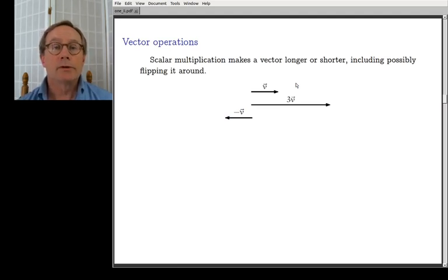The operations that we introduced for vectors last time were addition and multiplication. Multiplication is the easier of the two, so starting with multiplication. If you multiply a vector times three, you make it three times as long, pointing in the same direction, but three times as long. If you multiply a vector by minus one, you make it point in the other direction. If you multiply the vector by minus three, you'd make it point in the other direction and be three times as long as it was before. So scalars, the three or the minus one here, rescale the vector. The geometry is they simply make it bigger or smaller. That's all.